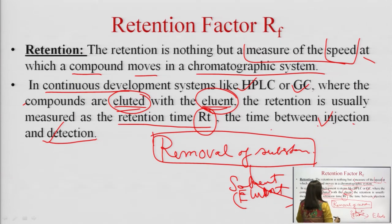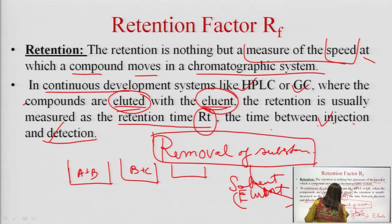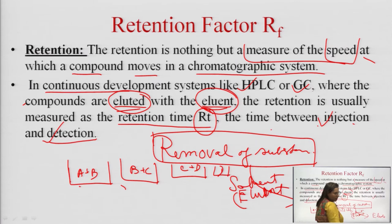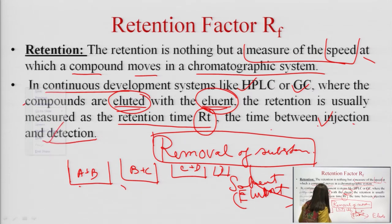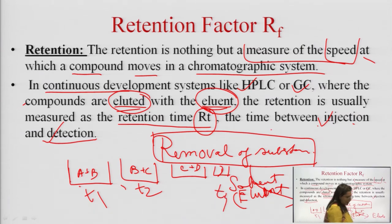In column chromatography, various fractions are collected at specific time intervals — fractions may contain A+B, B+C, C+D, or plain D. Each fraction is detected at a different retention time: fraction A may have retention time T1, B+C would be T2, and D may be T4. This will be discussed further in column chromatography.